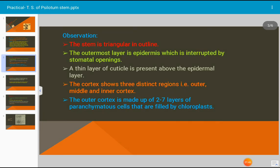What we have to observe: the stem is triangular in outline. The outermost layer is epidermis. Epi means outer, dermis means skin. The outermost layer of stem is known as epidermis which is interrupted by stomatal opening. Stomata are present.